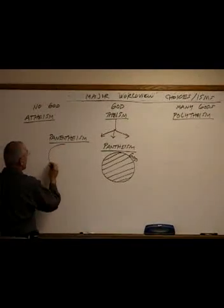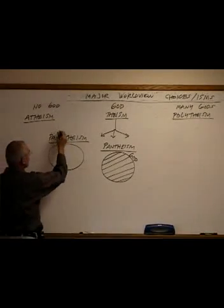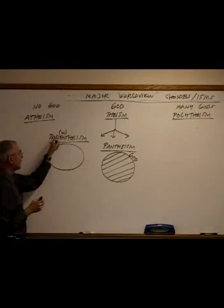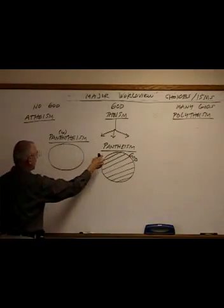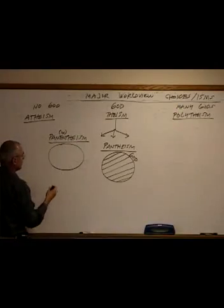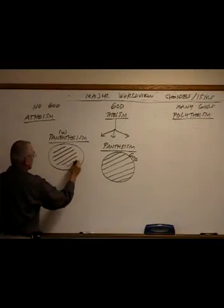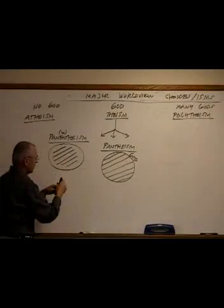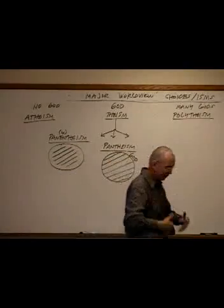Now, this over here, panentheism, by an accident of vocabulary in English, the en is really much like the meaning of the word in. So if this would mean all is in God, there's a view here. So if a little bit different than all is God, now we're saying all is in God. So maybe we draw our lines this way. Here, our lines do not touch the circle. So there's a distinction. But God has as his content all things.